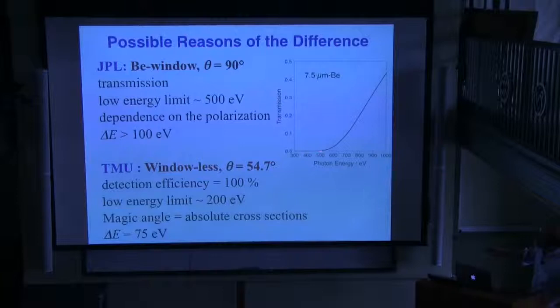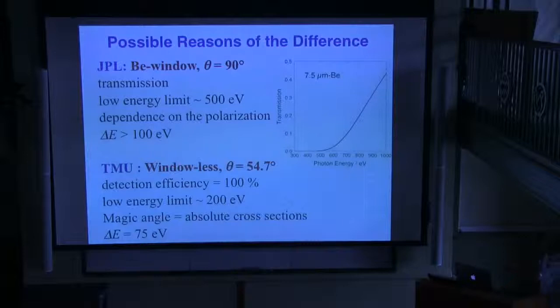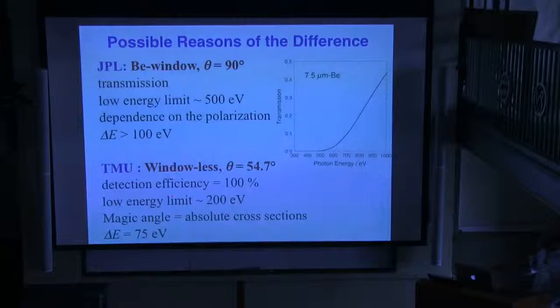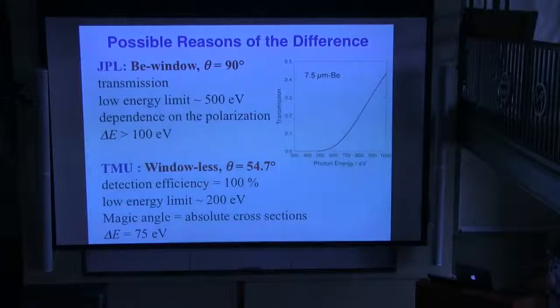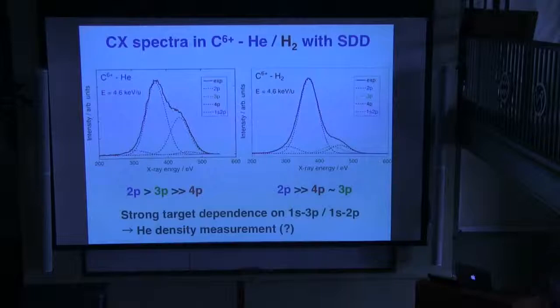Our detector requires no intensity calibration correction for the beryllium window, and the low energy limit is about 200 eV. Also, in the perpendicular direction they must consider polarization, whereas in our case we use the magic angle to obtain absolute cross-sections. The energy resolution is also a bit better in our case.